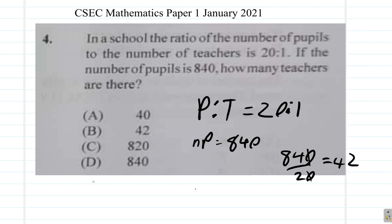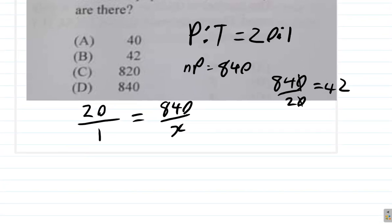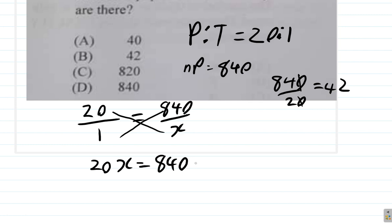Also, you could say: pupils 20 to teachers 1. So 20 pupils to 1 teacher is equal to 840 pupils to X teachers — X being unknown. If you cross-multiply, 20 times X is equal to 840 times 1.